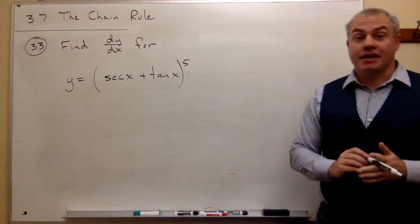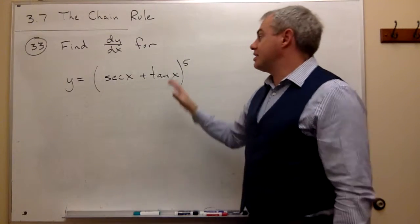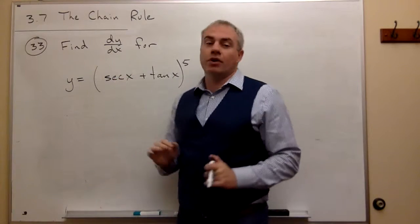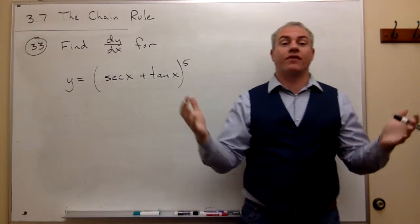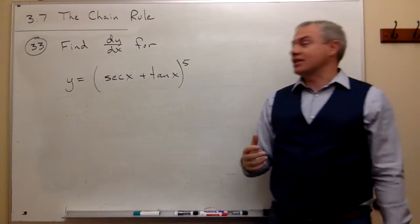So again, we want to use the chain rule. And whenever I see a situation in which I want to use the chain rule, what I'm looking for is, is there an outermost function that's happening? Or what is it that happens last?